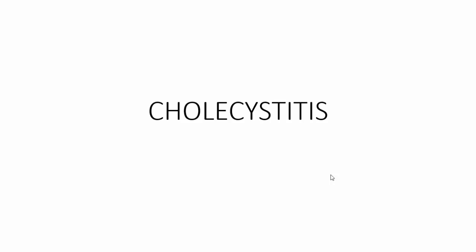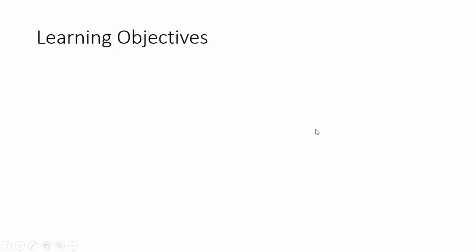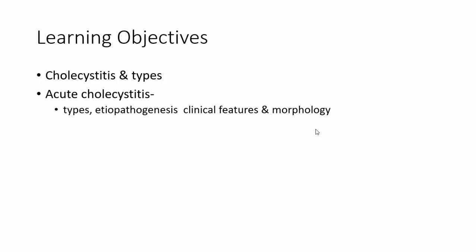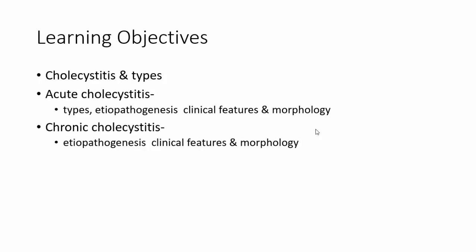Hello everyone, welcome to this short tutorial from Pathology Made Simple at ILO Pathology. In today's session, we'll be discussing cholecystitis. The learning objectives are: at the end of this session, you should be able to know what cholecystitis is and know the various types. We'll discuss in detail the etiopathogenesis, clinical features, and morphology of acute cholecystitis, chronic cholecystitis, and the various complications associated with cholecystitis.